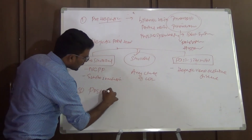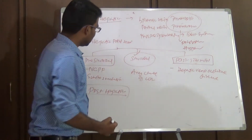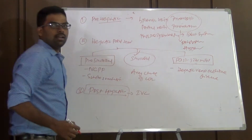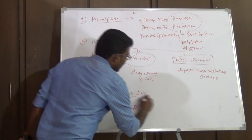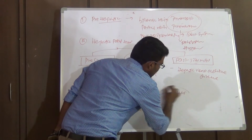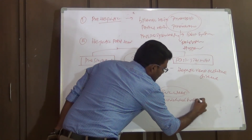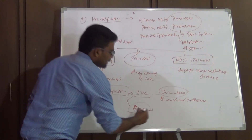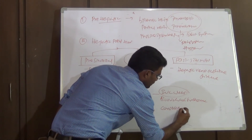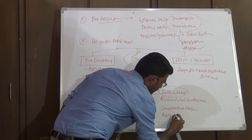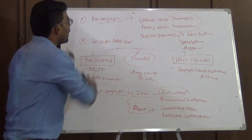The third category is post-hepatic causes — problems occurring after the liver. These can be in the inferior vena cava or in the heart. Common causes include webs in the inferior vena cava, Budd-Chiari syndrome, constrictive pericarditis, and restrictive cardiomyopathy. These are the main causes of portal hypertension.